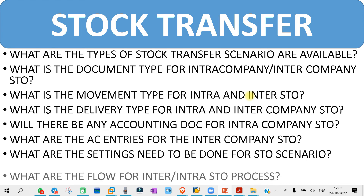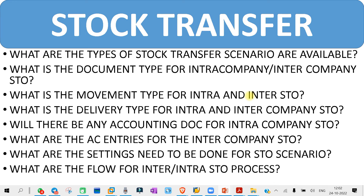The next question you might get is: what is the flow for inter or intra company STO? You need to explain the business flow from the supplying plant to the receiving plant — what is the starting document or starting process, and where we go next. For example, first we create a PR in the receiving plant, then an STO in the receiving plant, then send the STO to the supplying plant. All process flows are discussed in the subjective topics.